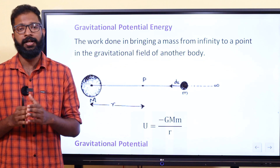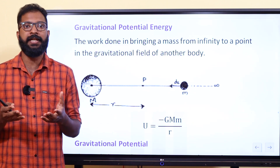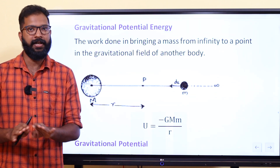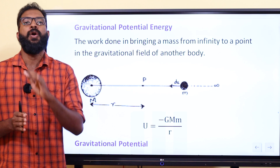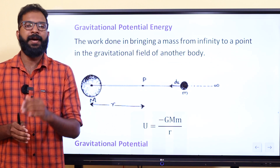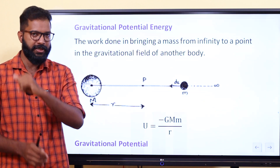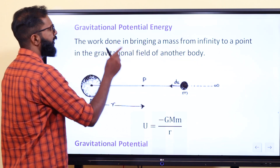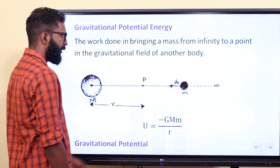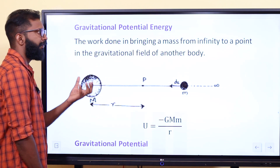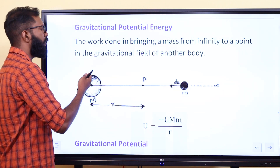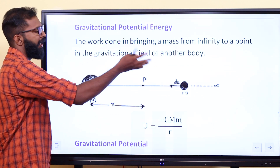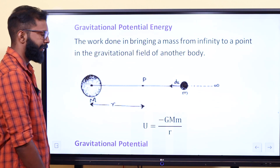This is the gravitational energy. The gravitational potential energy is the work done in bringing a mass from infinity to a point in the gravitational field of another body. That's it.